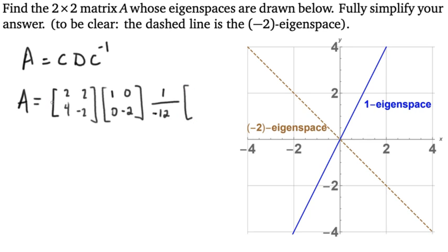Times, and then we do that thing, we switch the entries on the main diagonal. And then we make the entries on the other diagonal negative. Right? So this whole thing here is C inverse.